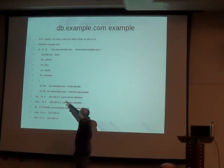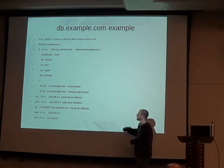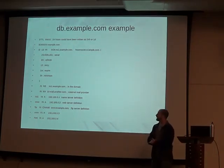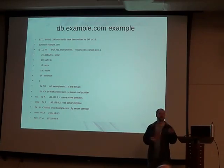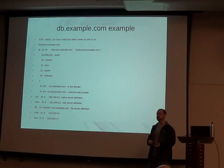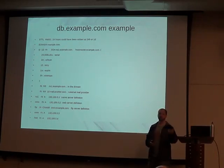In the zone file we have a couple of record types. We have a name server record with ns1.example.com as the primary server. We have an MX mail record set for mail.another.com, and that has a number — 10 — which is a weighting for that record. If you have multiple mail servers, each entry can have its own weighting to determine which mail servers should get the most mail. If all your mail servers are equally powerful, you may set them all to 10.